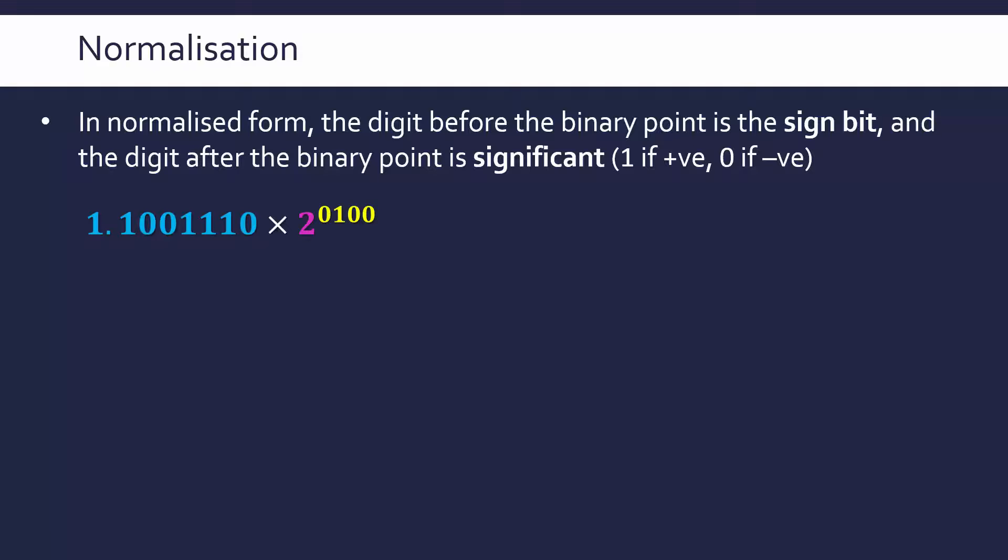So, here for instance, we've got an example of an un-normalised binary number, because looking at our first two digits in our mantissa, the first one is fine, it's a 1, it means we've got a negative number. The second digit, the one after our binary point, is not ideal because it's not significant.